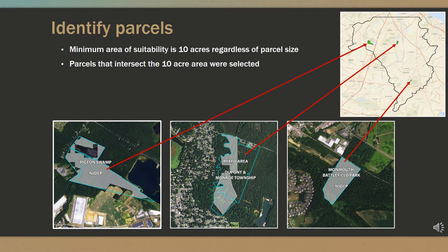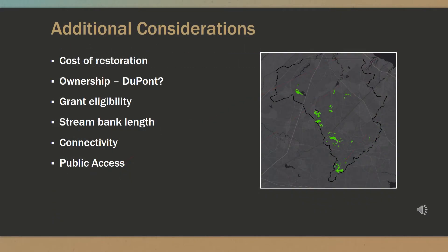The minimum area of suitability was 10 acres regardless of parcel size, and parcels that intersected the 10-acre area were selected. The individual parcel sizes ranged from 17.4 to 163.9 acres. Limitations such as the cost of restoration should be evaluated. Land ownership has consistently posed problems in previous studies, so a filter could be applied to eliminate certain types of ownership. Grant eligibility is another important concern. The approval of new NJDEP total maximum daily load levels may create funding opportunities in areas with slightly lower restoration potential. Measuring stream bank length eligible for anti-degradation upgrades, habitat connectivity, and public accessibility are also key factors in decision making.